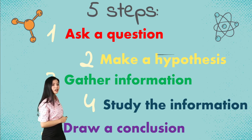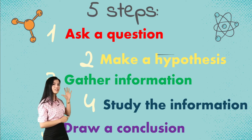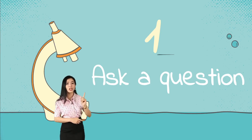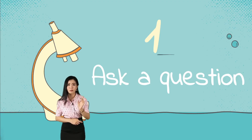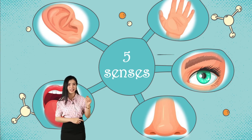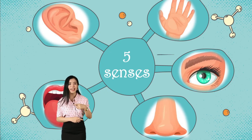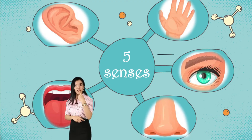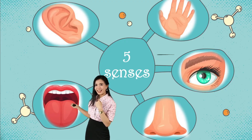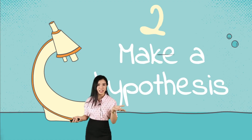Let's talk about these five steps one by one. First: ask a question. We have to formulate our questions based on our five senses — sense of hearing, sense of touch, sense of sight, sense of smell, and sense of taste. After asking a question, we move to the next step.